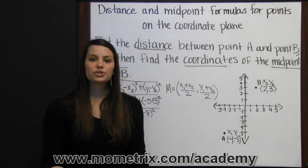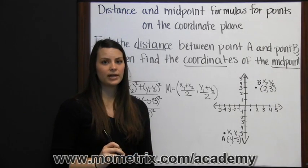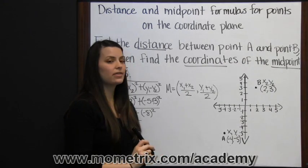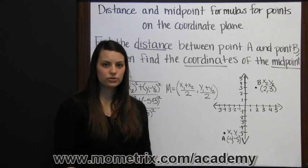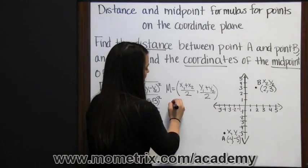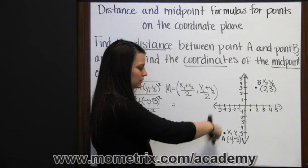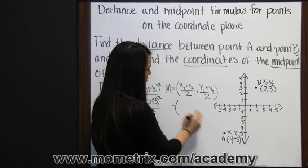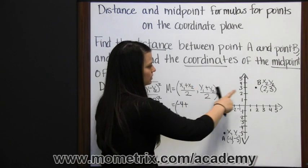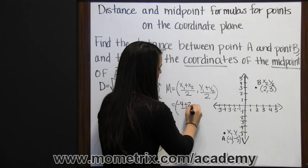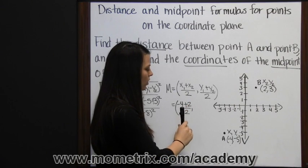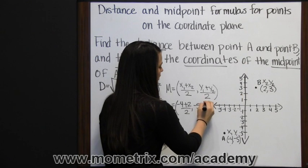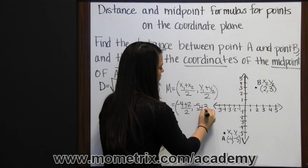Basically what you're doing is finding the average of your x coordinates and the average of your y coordinates, because you're adding two numbers together and dividing by 2. We'll plug our coordinates into the formula: x1, negative 4, plus x2, 2, divided by 2; then y1, negative 5, plus y2, 3, divided by 2.